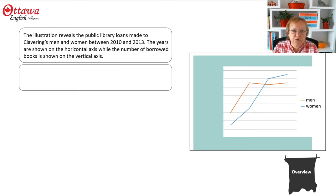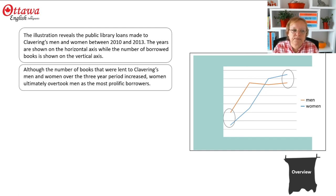Then we go on to the overview. The overview is like imagining looking at this picture from across the room. You can see that there are two lines and that the two lines do something, but you can't see any details. So you're looking at the starting points and the end points, and whatever intersection these lines have. Our overview, without any details, is going to say: 'Although the number of books lent to Clavering's men and women over the three-year period increased, women ultimately overtook men as the most prolific borrowers.' There's no detail in there at all.